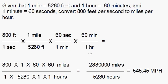In this next example we are given that 1 mile equals 5,280 feet and 1 hour equals 60 minutes and 1 minute equals 60 seconds. And we are going to use that to convert 800 feet per second to miles per hour.